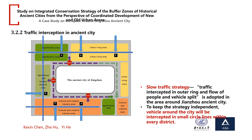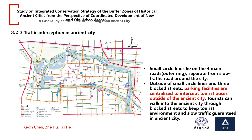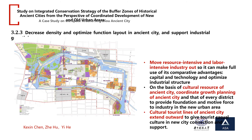Second, traffic interception in the ancient city. To keep the strategy independent, vehicles around the city will be intercepted along small circular lines within every district. Outside of these small circle lines and along three-blocked streets, parking facilities are centralized to intercept tourist buses outside the ancient city. This aims to decrease density, optimize the function layout within the ancient city, and support industrial growth in the new area by moving resource-intensive and labor-intensive industries out.